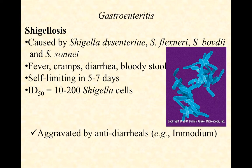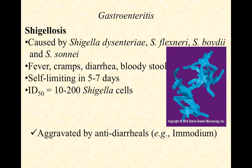Shigellosis is typically self-limiting in five to seven days, though if caught early enough you can use antibiotics and it can respond. The ID50 value is pretty low — between 10 and 200 cells, a really small dose, much like E. coli. Another clue is that Shigellosis is often aggravated by anti-motility drugs like Imodium. If your patient reports fever, cramps, diarrhea, bloody stool, a questionable food source, and Imodium hasn't helped — or things are getting worse — make note of that, because Shigellosis is known to respond that way to anti-diarrheals.